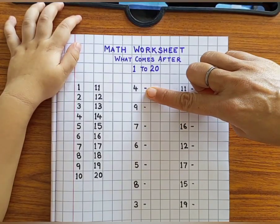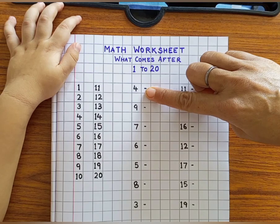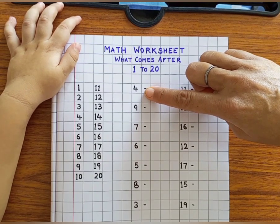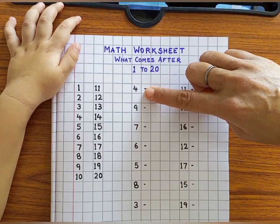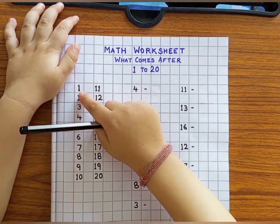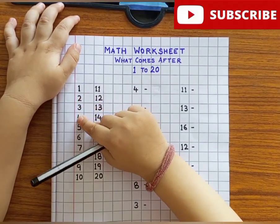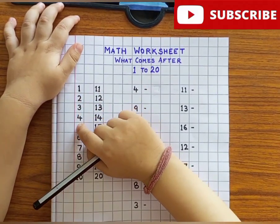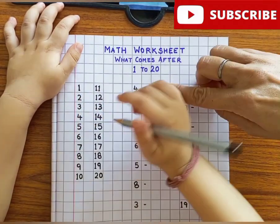Which number is it? 4. What comes after 4? 5. 5 — find number 5. This is. Very good. Right here.